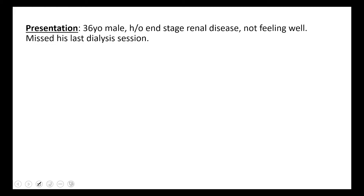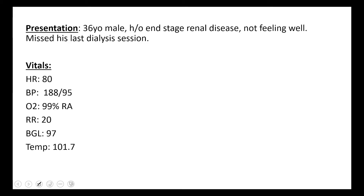Your story for your patient is that we have a 36-year-old male. He's not feeling well. He does have a history of end-stage renal disease and he missed his last dialysis appointment because he was feeling too sick to go. When you get your set of vital signs, here's what you see: a heart rate of 80, a blood pressure of 188 over 95 — a little hypertensive, which is not uncommon in our dialysis patients. He's 99% on room air, not complaining of shortness of breath, normal respiratory rate, normal blood sugar, and a little bit febrile.